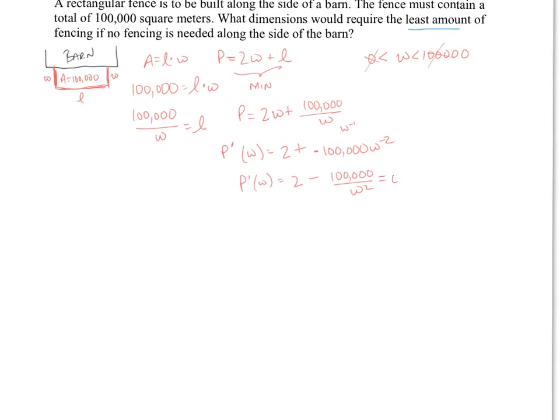Okay, at this point, we can go ahead and set this equal to 0. So we'll set this equal to 0, and we'll solve. So I will end up with 100,000 over w squared. If I move this over, that equals 2. So we end up with w squared equals 100,000 over 2, which gives me the square root. Now, I'm not using the negative, because we don't have a negative dimension of 50,000.